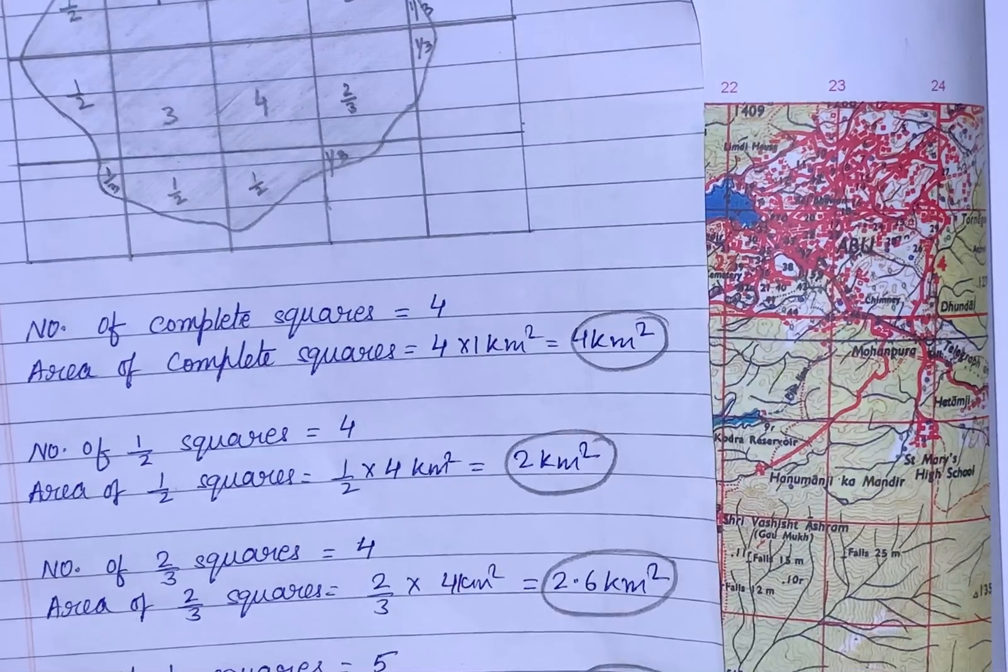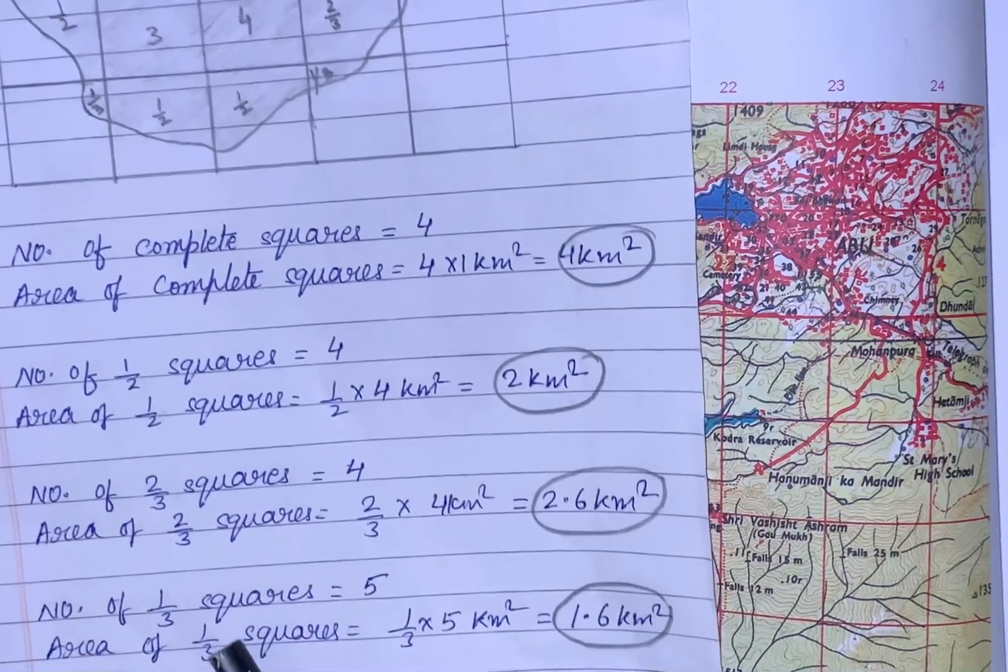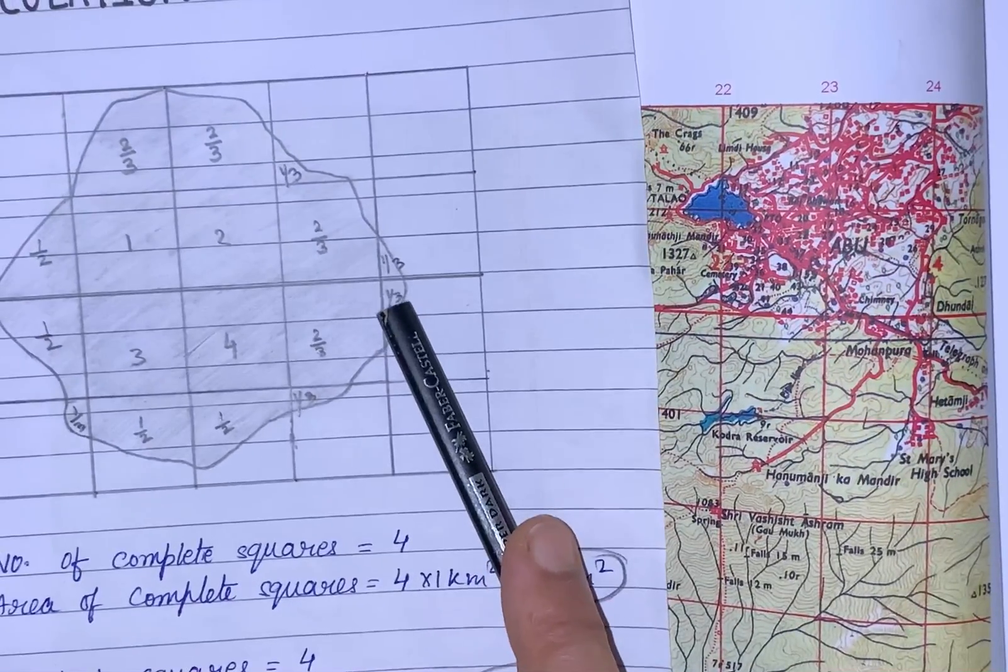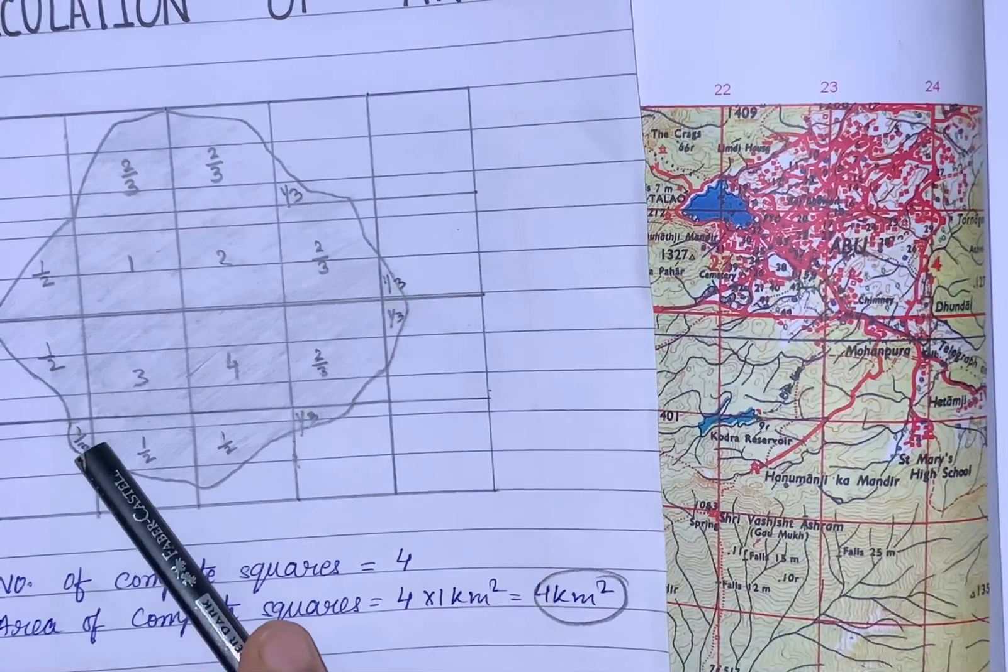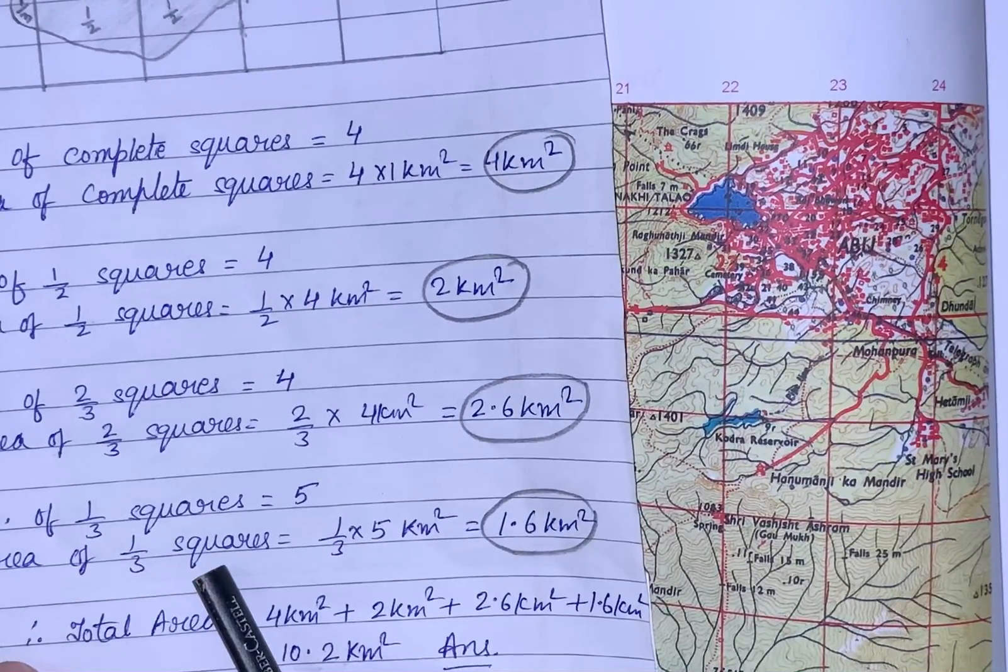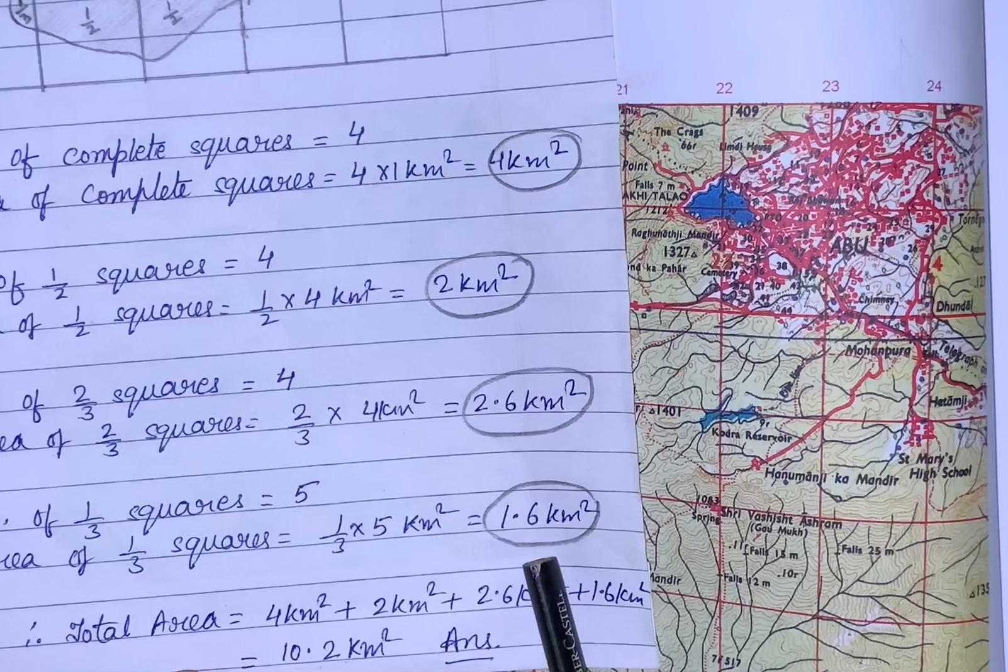Last, the number of one-third squares - we will count the very small parts: 1, 2, 3, 4, and 5. Then we will write five here, and the area of one-third squares will be 1.6 kilometers square.